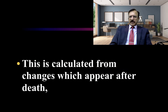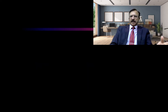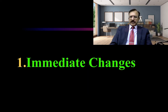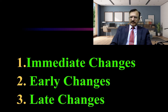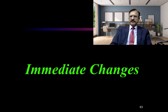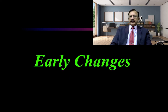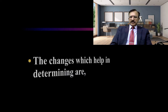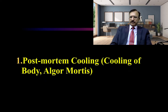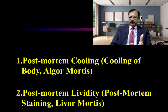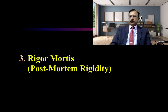We calculate which state the changes are appearing in. There are immediate changes, early changes, and late changes. In the previous lecture we discussed the immediate changes, and today we move on to the early changes: post-mortem cooling or algor mortis, post-mortem lividity or livor mortis, and rigor mortis — post-mortem rigidity.